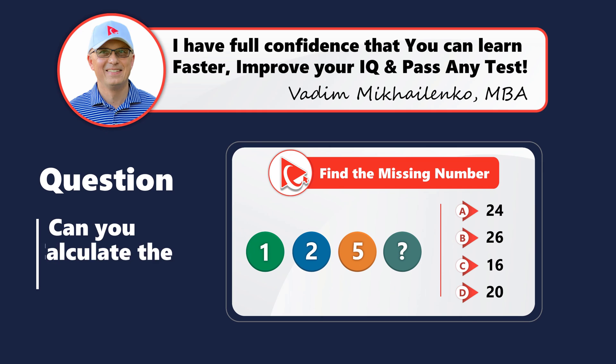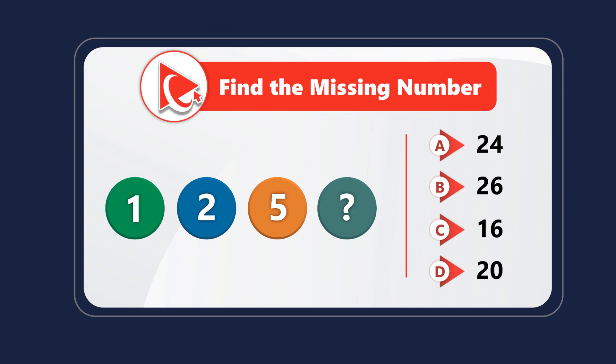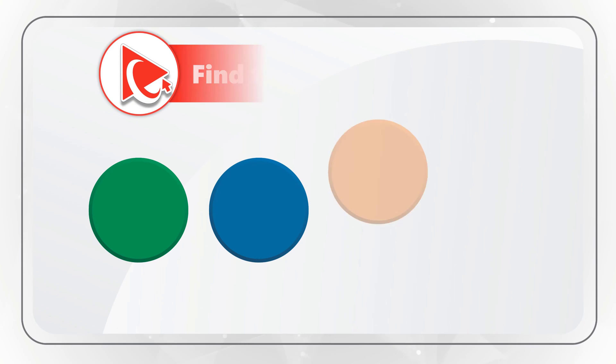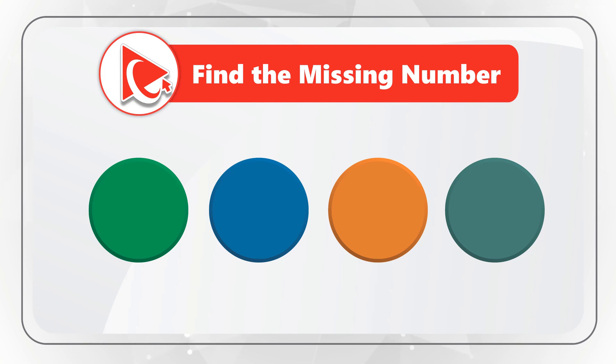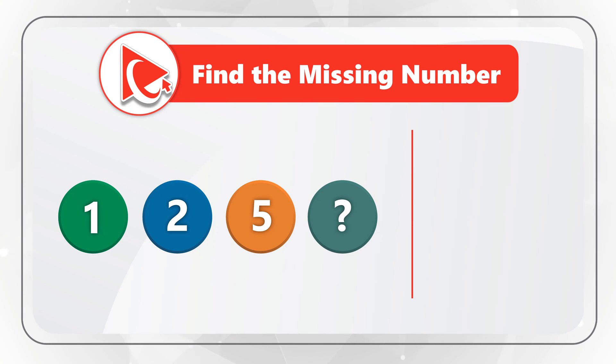Here's a very interesting question where you need to calculate the missing number. You are presented with 4 circles. Each circle is of a different color. The first circle has number 1 inside of it. Second circle has number 2. Third circle has number 5 inside. And last circle has the missing number represented by the question mark. You need to calculate and select final answer out of 4 possible choices: 24, 26, 16, or 20. Take a close look to see if you can calculate the final answer.